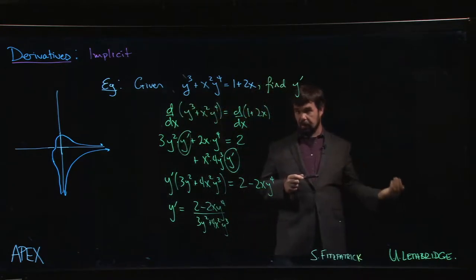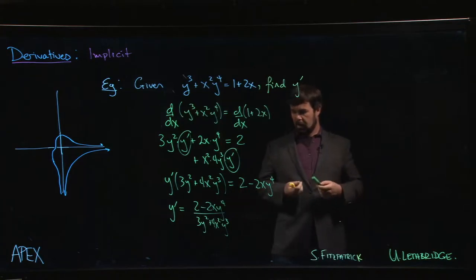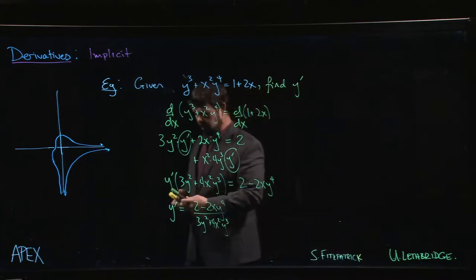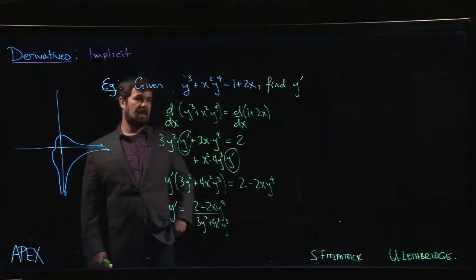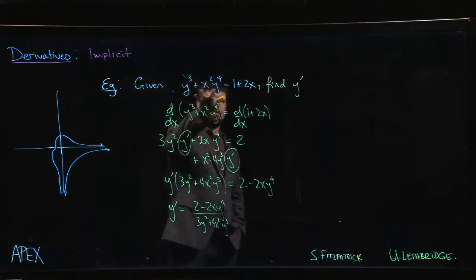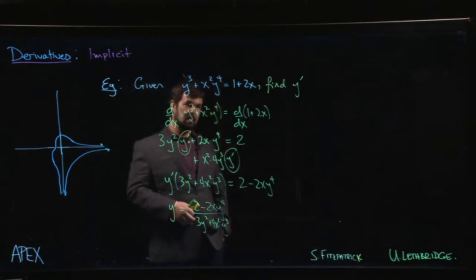Now of course it is an expression in terms of both x and y. And so it's still the case that if we wanted to figure out the slope of the tangent line at some point on the curve, we'd first have to find that point on the curve. And that means we have to find solutions to this equation that we started with, which could be easier said than done.